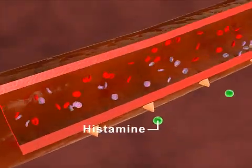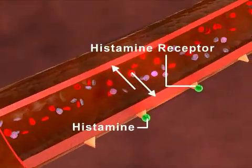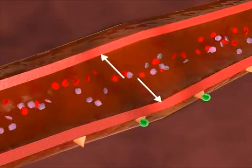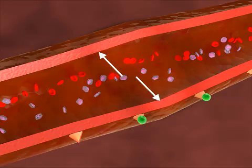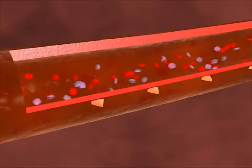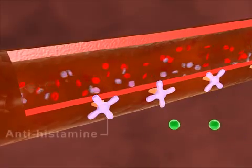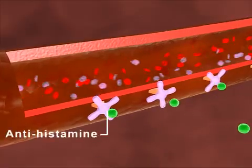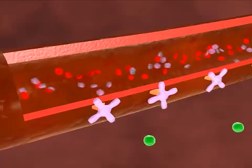These mediators cause dilation of the surrounding blood vessels and increase their permeability. This results in the nasal stuffiness, sneezing, and mucous discharge of allergic rhinitis. Antihistamines work by blocking the action of histamines at its receptors and thus decreasing the body's reaction to the allergen.